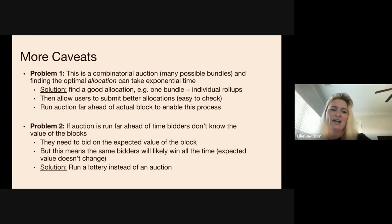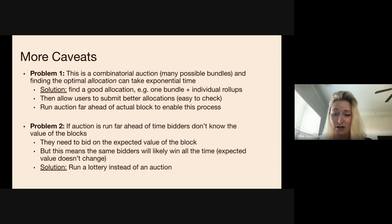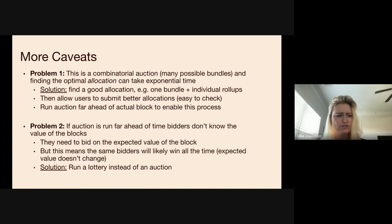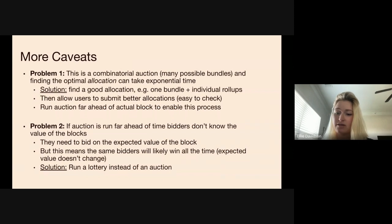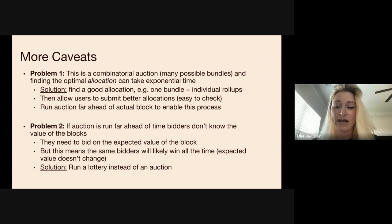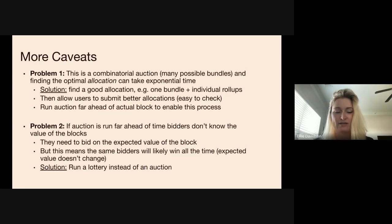A caveat is that this is a combinatorial auction, which becomes computationally intractable with many rollups — with 100 or 1000 rollups, finding the optimal allocation is infeasible. The solution is to find a good-enough allocation by running an optimizer for a minute or two and outputting the best allocation found within that time. Since all bids in the network are public, someone else can offer a better allocation if they find one, potentially earning a finder's fee. This is how we get around the intractable combinatorial problem.